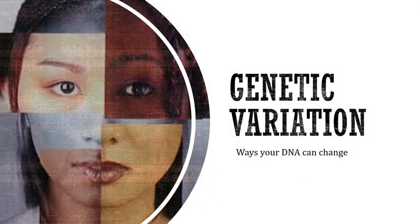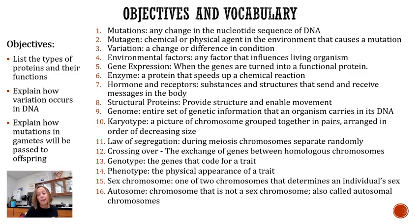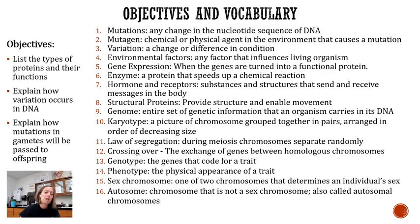Hi everybody and welcome to this week. What we're talking about is genetic variation, which is different ways that your DNA can actually change. Like always, we're going to start with our objectives and our vocabulary. The vocabulary is already on Quizlet. The objectives are: list the types of proteins and their function, explain how variation occurs in DNA, and explain how mutations are passed to offspring.